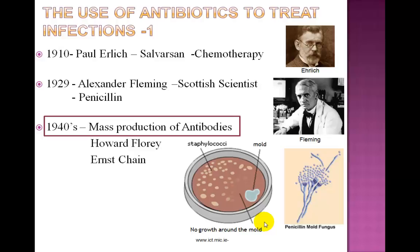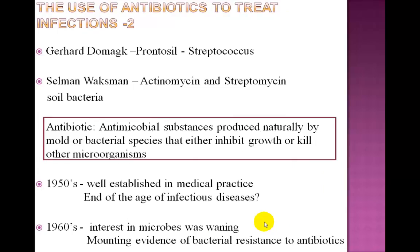However, it was only in the 1940s during World War II that there was a need for mass production of antibiotics. Howard Florey and Ernest Chain were able to purify penicillin and carry out clinical trials to show that the antimicrobial agent had its potency as a drug. Other antibiotics were discovered as well. Prontosil was discovered by Gerhard Domagk and was shown to be effective against bacterial species such as Streptococcus and Staphylococcus. Selman Waksman discovered the antibiotics actinomycin and streptomycin, which are derived from soil bacteria.